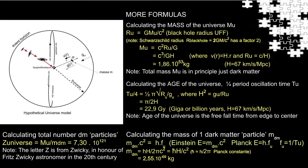And just for fun, the total number Z of a dark matter particle in the universe is 7.30, 10 to the power 121. The total number I call Z in honor of Fritz Zwicky, who coined the name dark matter or dunkele materie in the 1930s.